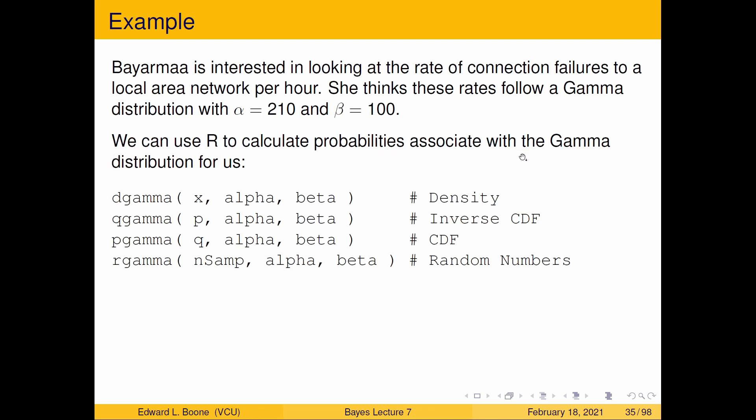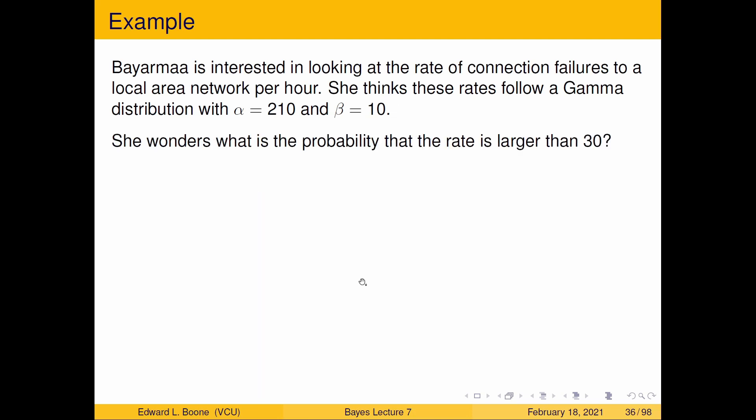We can use R to help us calculate the probabilities associated with the distribution for this, and in R, we have dgamma for the density, qgamma for the inverse CDF, pgamma for the CDF, rgamma will give us random numbers, and all I need to know is alpha and beta, and bingo, this thing will work. Now she's changed her mind and changed beta to 10.